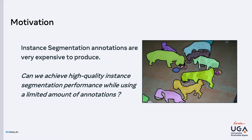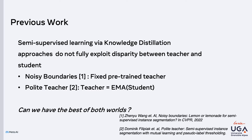The main motivation behind our work is that producing instance segmentation annotations is a very expensive procedure, as every relevant instance in the image needs to be carefully outlined and separated from its environment. Hence, we aim at reducing the amount of annotations needed to train highly accurate instance segmentation models. Some previous works propose different solutions to solve this task, mostly using knowledge distillation.